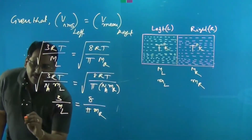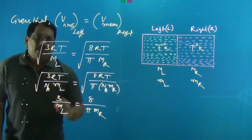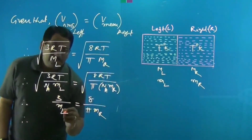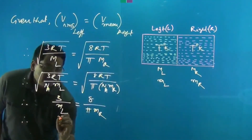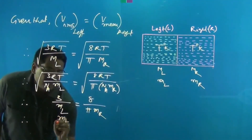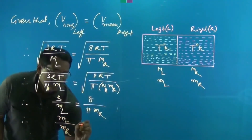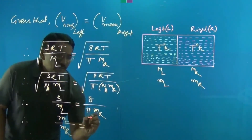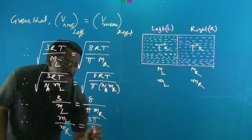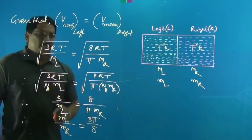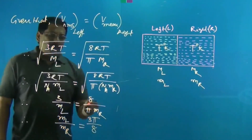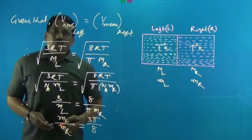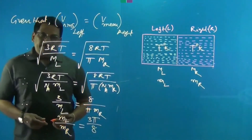As asked, the ratio of the mass of a molecule on the left side to that on the right side is m_L / m_R = 3π / 8. So the clear answer is 3π/8, which corresponds to option 4.